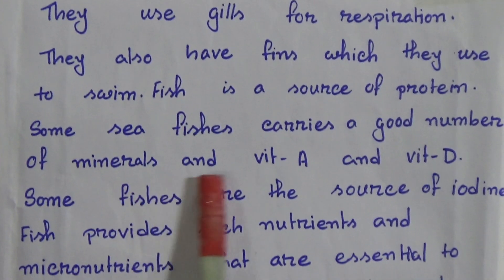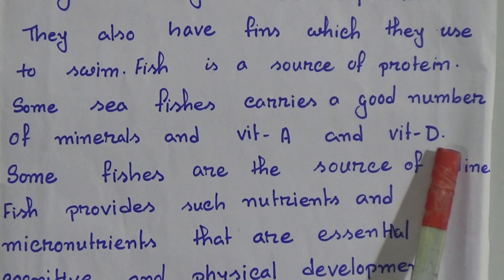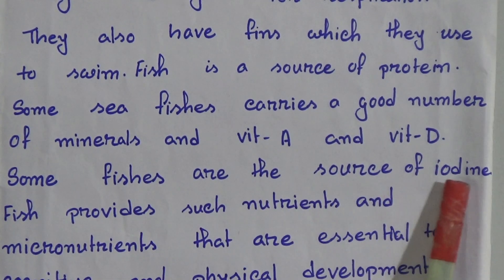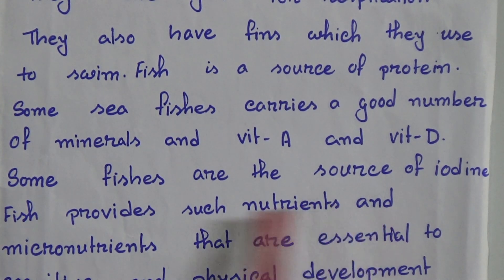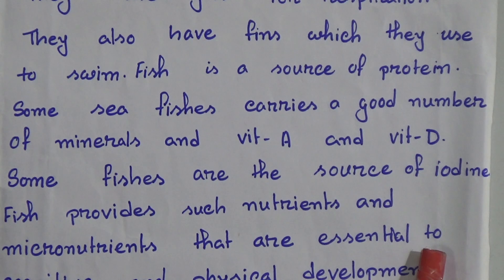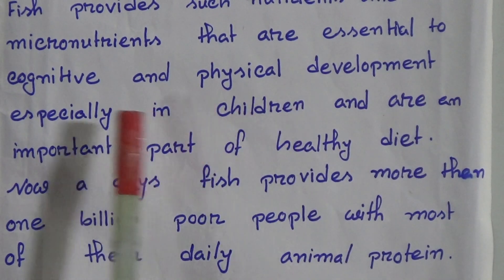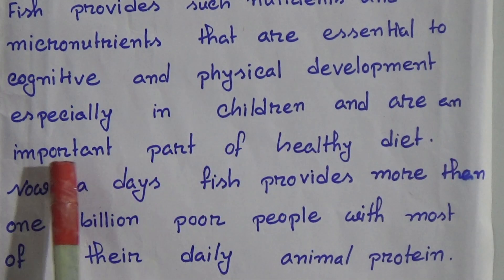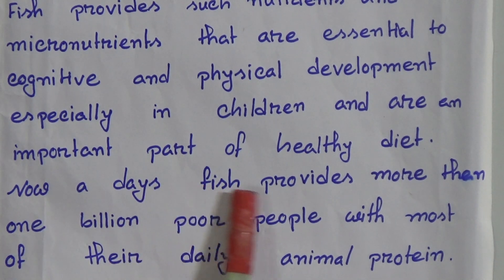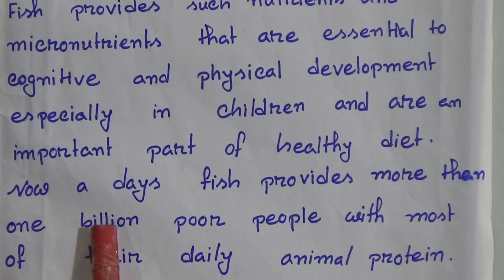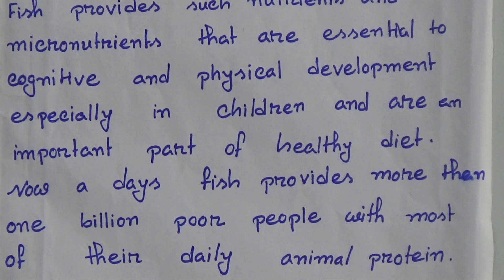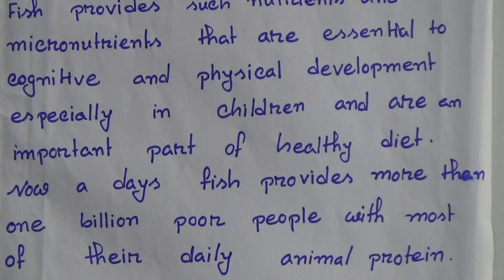Fish is a source of protein. Some sea fishes carry a good number of minerals, vitamin A, and vitamin D. Some fishes are also a source of iodine. Fish provides nutrition and micronutrition essential to cognitive and physical development, especially in children, and is an important part of a healthy diet. Fish provides more than one billion poor people with most of their daily animal protein.